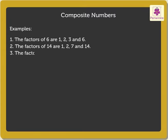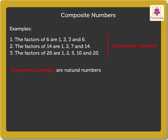The factors of 20 are 1, 2, 5, 10 and 20. All the above numbers have more than two factors. These numbers are called composite numbers. Thus, composite numbers are natural numbers that have more than two factors.